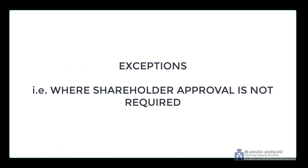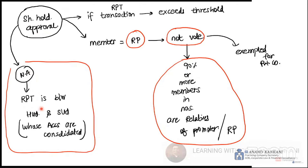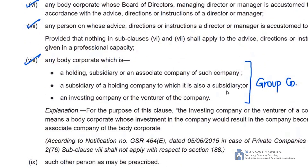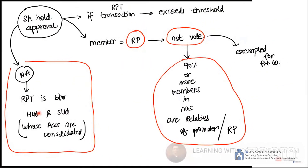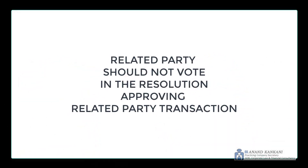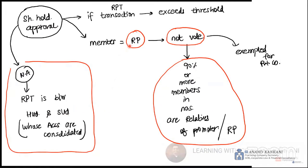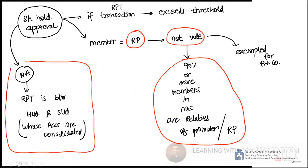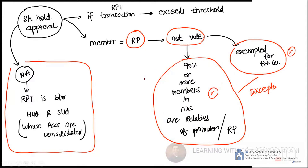Shareholder approval will not be applicable if a related party transaction is between a holding and subsidiary company. So if you remember, that is a related party transaction, but for that you don't require shareholder approval. However, holding-subsidiary accounts consolidate. And for that related party transaction, the member should not vote. But we have two exceptions here: the related party will vote, and the private company will vote.